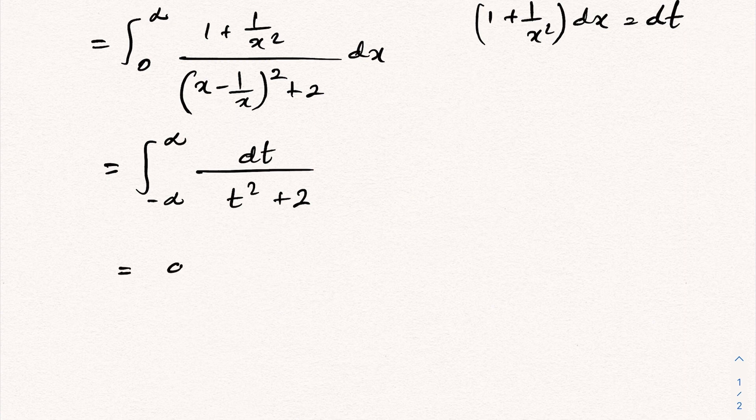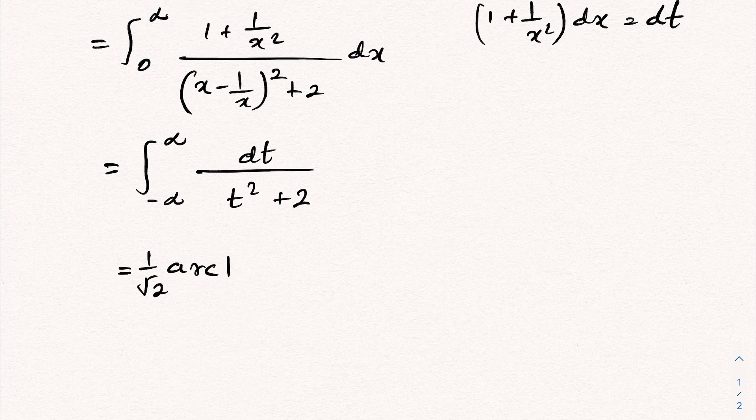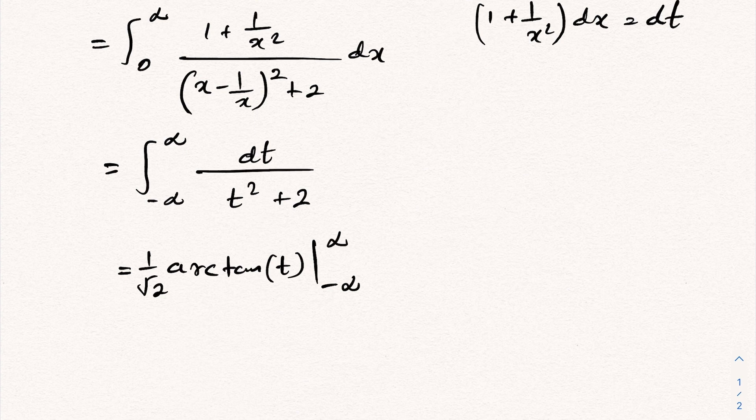We have 1 over square root of 2, arctangent of t, limit from minus infinity to infinity. Arctangent of infinity is π over 2, then minus infinity gives us minus π over 2.